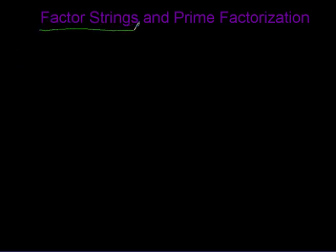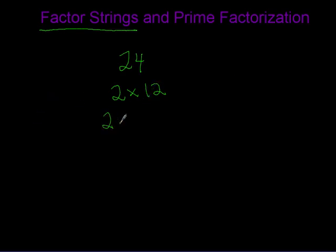One is neither prime nor composite. Starting off with factor strings, we'll use 24 as an example. A factor string is basically a string of factors multiplied together that equal the target number — in this case, 24. It could be as small as two numbers, so two times twelve is a factor string of 24. Or we could write twelve as two times six.